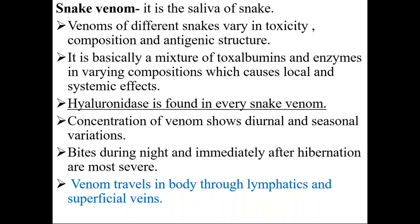Snake venom is nothing but the saliva of the snake. Venoms of different snakes vary in toxicity, composition, and antigenic structure. Basically, it is a mixture of toxalbumins and enzymes in varying compositions. Hyaluronidase is found in every snake venom.